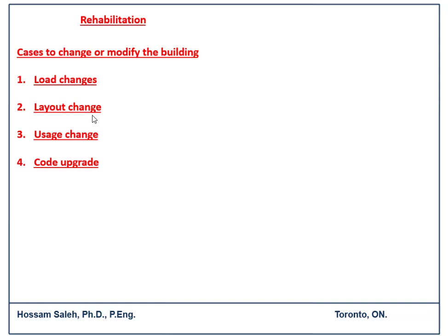You can also have a layout change in your structure, which means you need to remove some of the walls or even columns and find a new load path. Another case is a use change — when you change the use of the building, for example from a residential building to an institutional one, like a school or kindergarten.